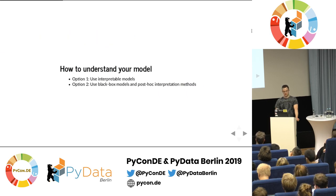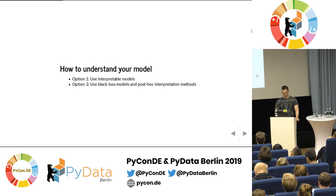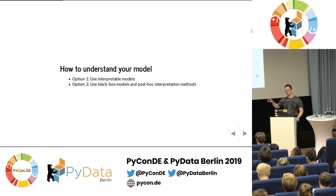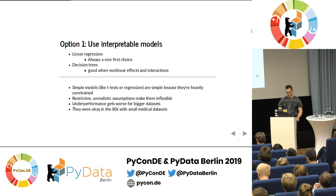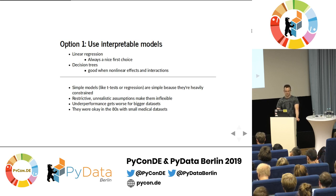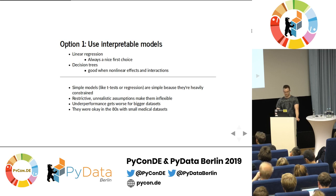To understand our model and solve the three problems introduced earlier, you have two options. Either you use a model that is already interpretable, or you use a black box model and then, as a second step, apply an interpretability method. The first option — using interpretable models — a linear regression is always a nice first choice, at least as a benchmark. Another alternative is decision trees, which you can also understand very well.